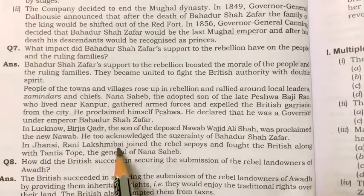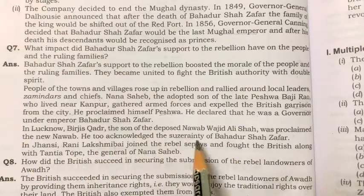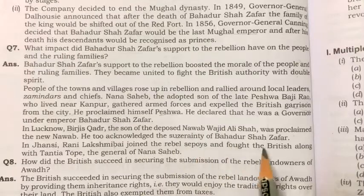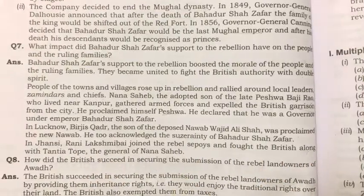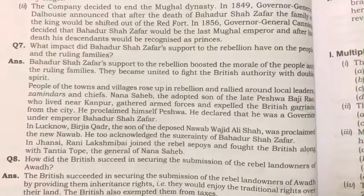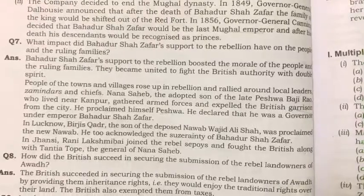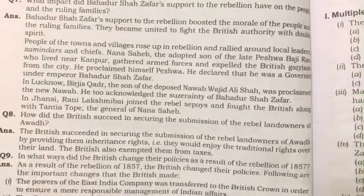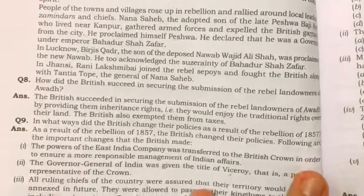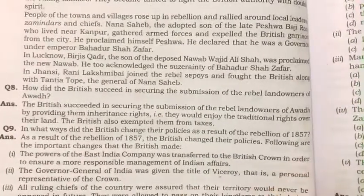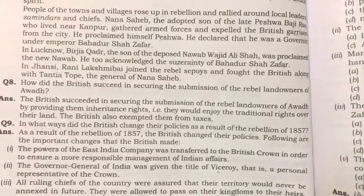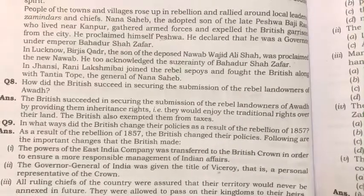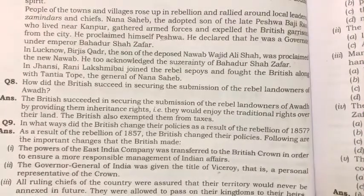In Lucknow, Birjis Qadr, the son of the deposed Nawab Wajid Ali Shah, was proclaimed the new Nawab and also acknowledged the suzerainty of Bahadur Shah Zafar. In Jhansi, Rani Laxmi Bai joined the rebel sepoys and fought the British along with Tatya Tope, the general of Nana Sahib.